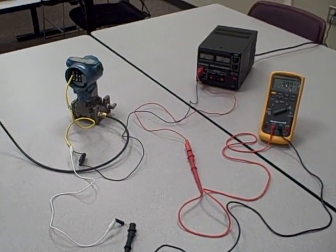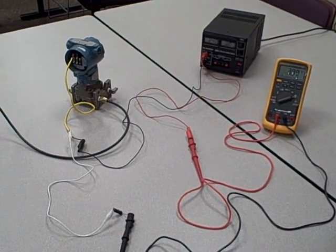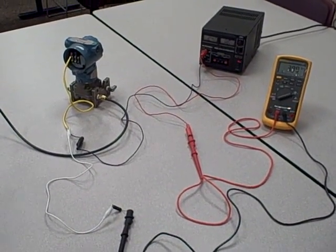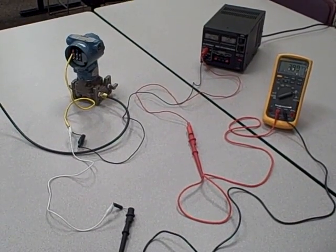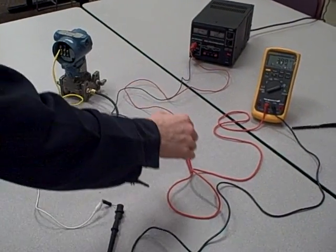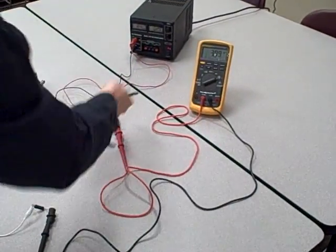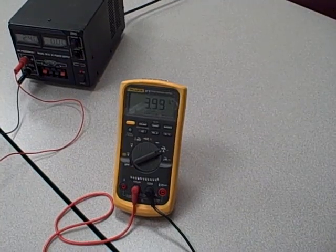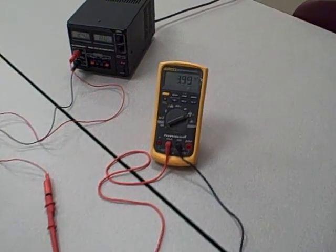We're going to do a simple exploration of 4 to 20 milliamp current loop and how this transmitter responds to pressure. The range of the transmitter currently is 0 to 1,000 inches of water pressure and we are currently measuring 0% which is a 4 milliamp signal. It says 3.99 on the meter but we're supposed to be at 4 milliamps. Close enough for a test.